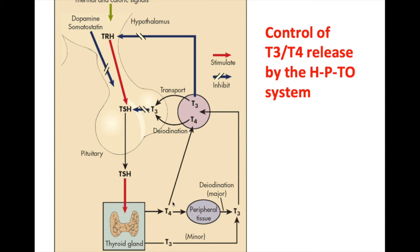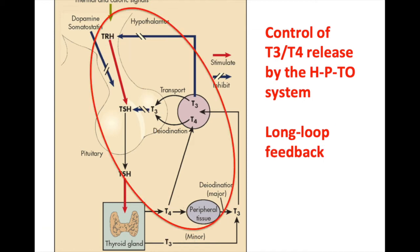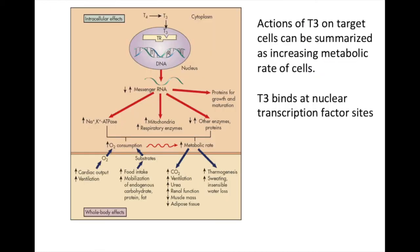Both T4 and T3 feed back onto the pituitary and the hypothalamus to inhibit TSH and TRH respectively. Notably, TSH does not feed back at all in this system, so you have long-loop feedback but no short-loop feedback.